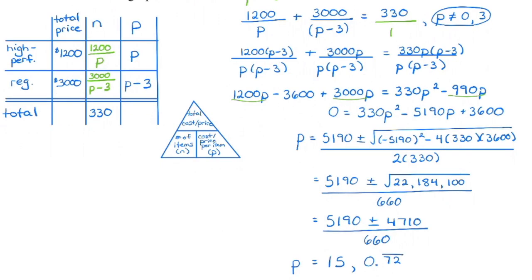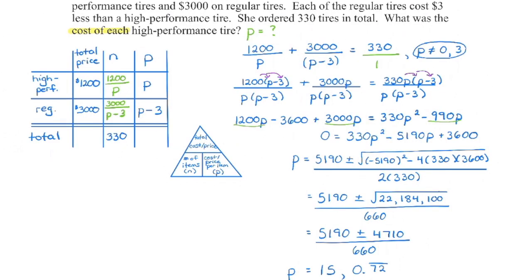Once we have the equation set up, we go ahead and solve it. At this point it's a quadratic equation, and rather than factor it, I'll use the quadratic formula. You could first take out the greatest common factor so the numbers are smaller. The radicand happens to be a perfect square. We add those numbers and divide by 60 for one solution, and subtract and divide by 60 for the other. We get two solutions, which we check against the restrictions and verify by substituting back in.